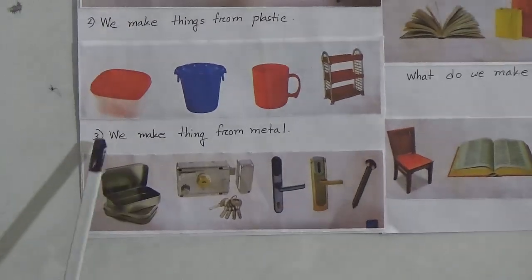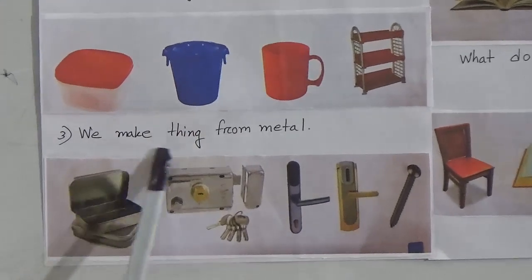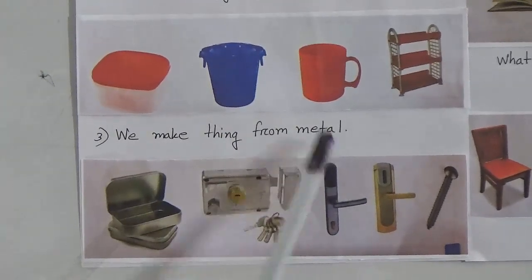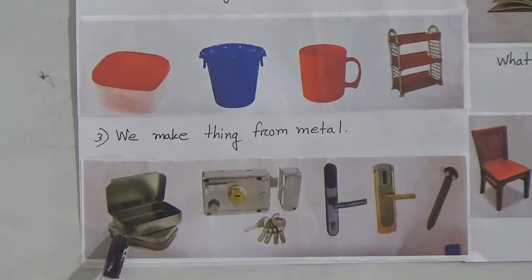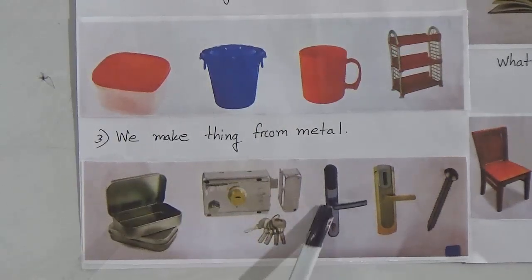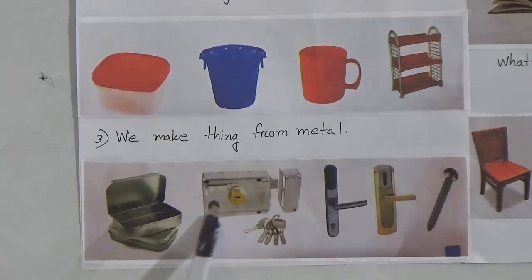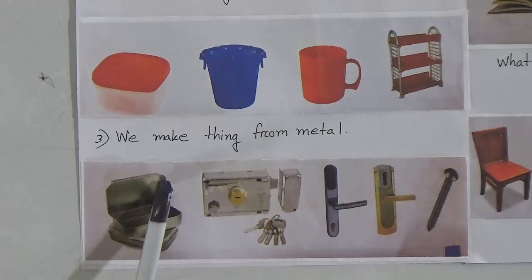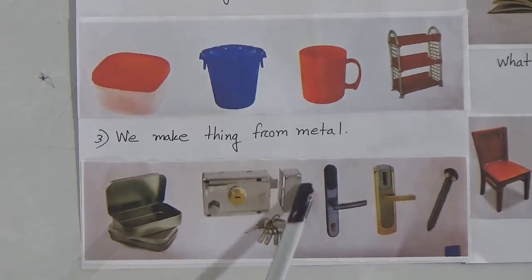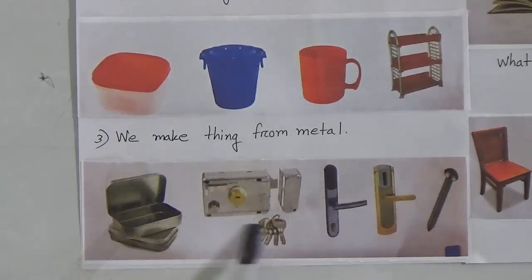Point number three: we make things from metal. Here is a box, here is a lock and keys, here is a door lock, and here is a pin — these all are made from metal.